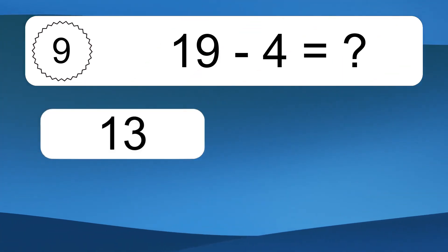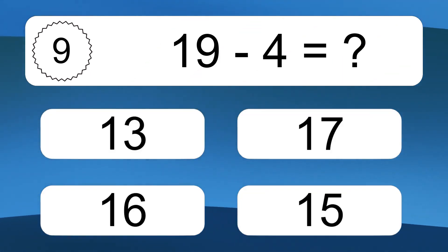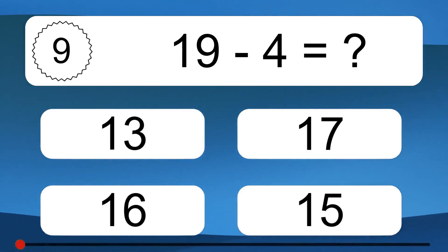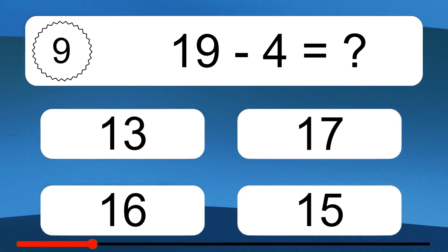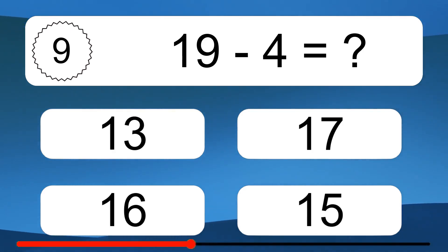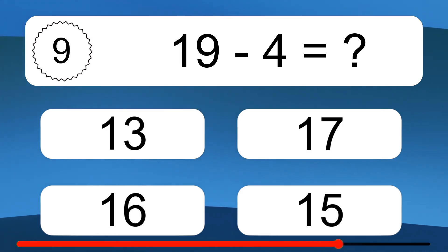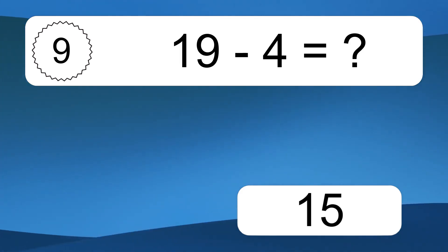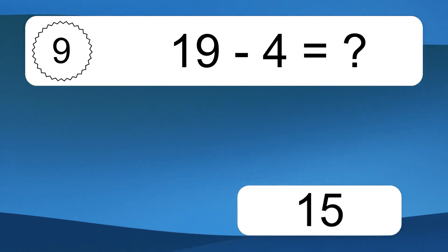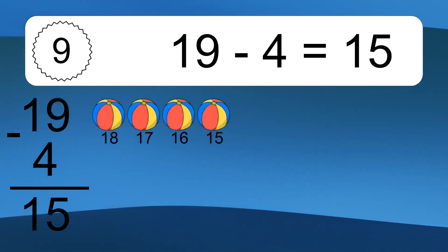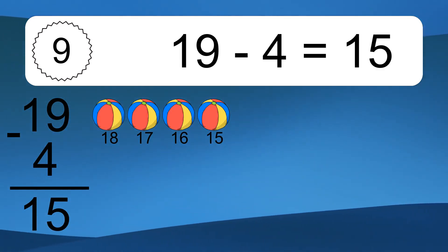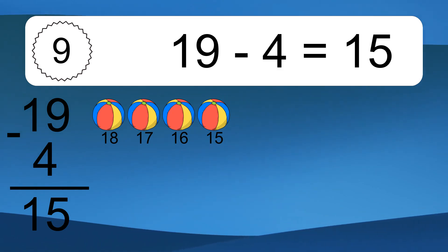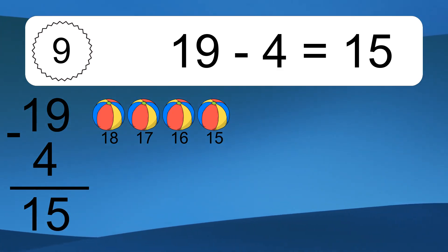19 minus 4 equals what? 19 minus 4 equals 15. Let's count it: 18, 17, 16, 15.